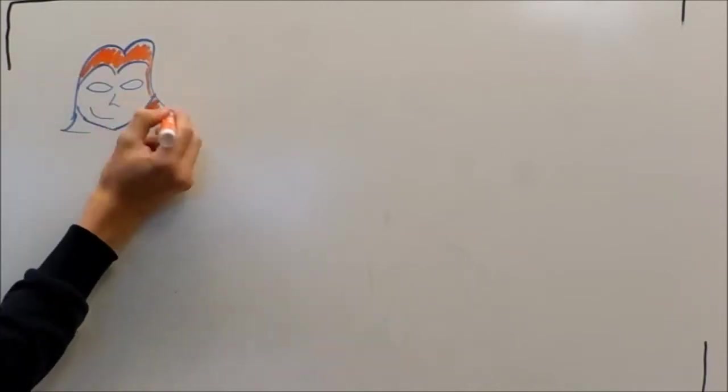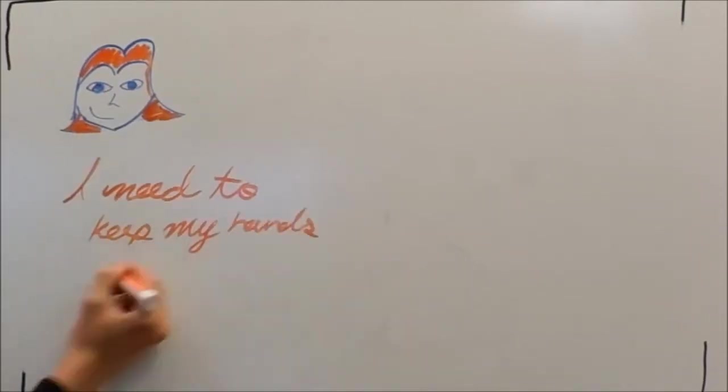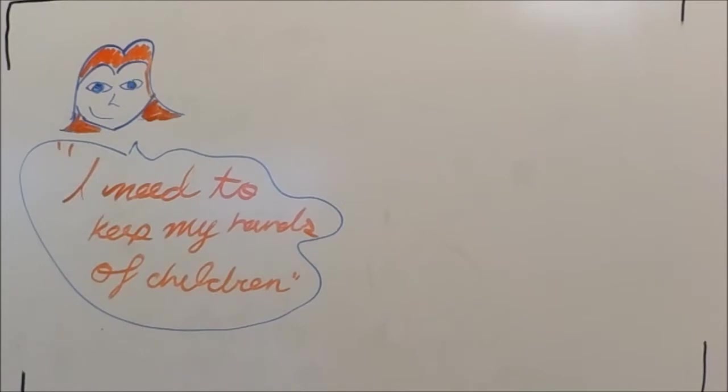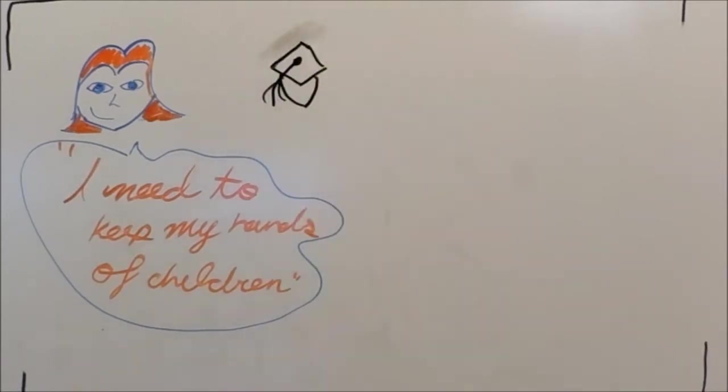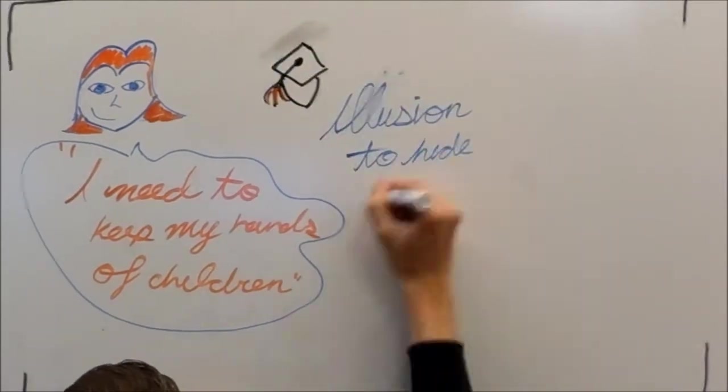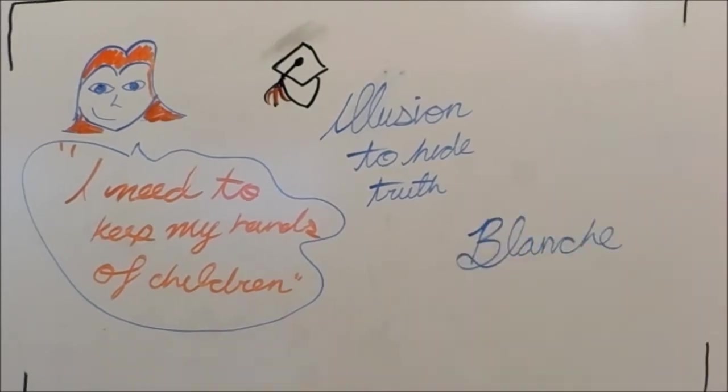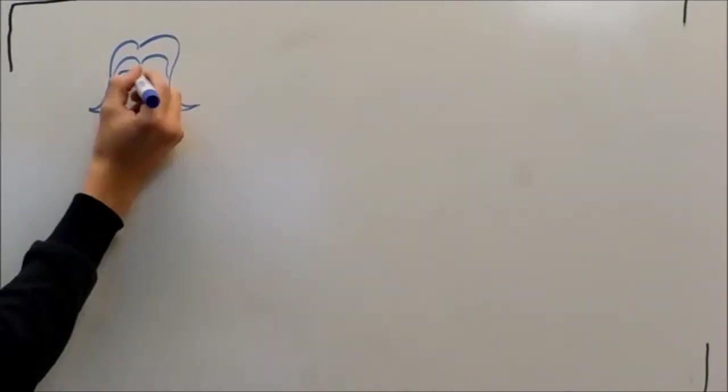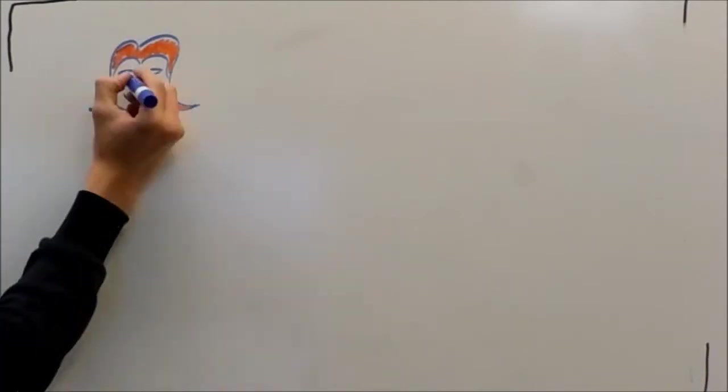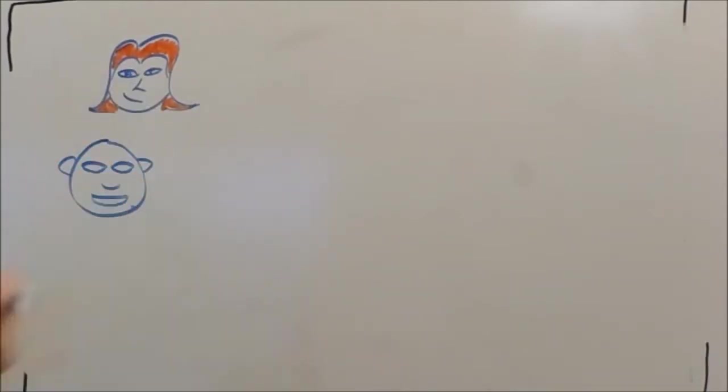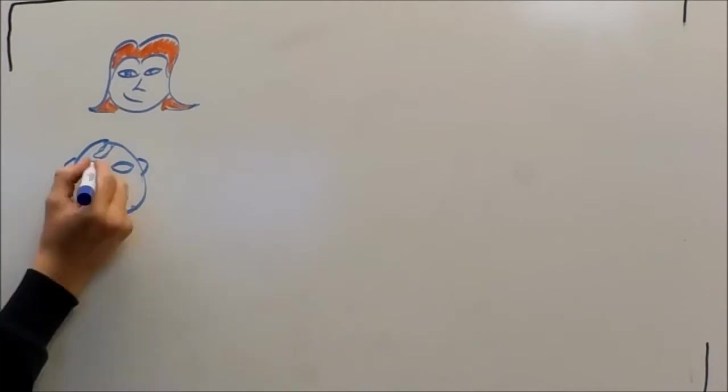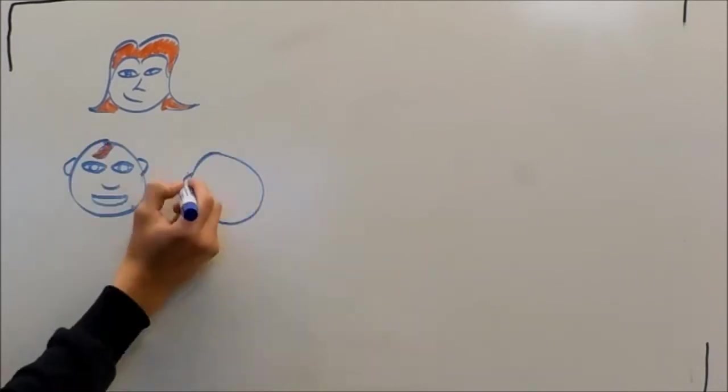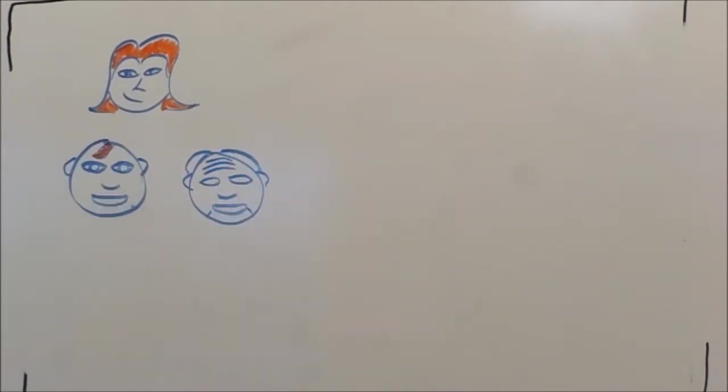Blanche states that she needs to keep her hands off children, which draws the conclusion that she has become sexually involved with one of her students. She had created this illusion to hide this truth in order to protect her Southern Belle identity, which was one of high stature and class. Blanche did not only prey on students, nor did she only prey on men of youth. She also preyed on strangers, as she would take them to the Tarantula Arms Hotel to feed her never-ending sexual desires.